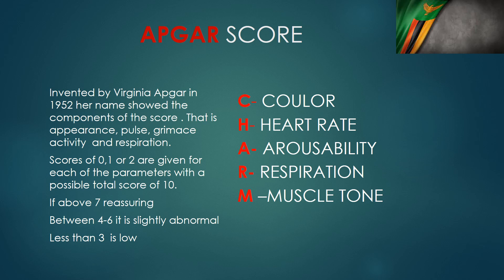You first look at the color of the baby. If it's blue everywhere, that's a zero. If it's blue in some places and pink in others, you give a one. And if the baby is pink everywhere, you give a two.